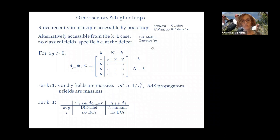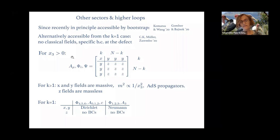A more pedestrian way to go to other sectors and higher loops is to consider the special case k=1. In the bootstrap formulation this corresponds to no boundary bound states. On the field theory side, k=1 means there are no classical fields, no vacuum expectation values, but there are specific boundary conditions at the defect.